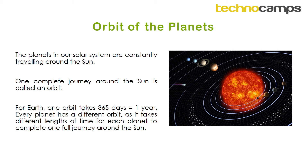So the first challenge in this activity pack is to research online how long it takes for all of the other planets to travel around the Sun in Earth days. Go onto Google and type in 'orbit of Mercury in days' and it will tell you the answer in Earth days. Do this for all of the planets and make a note of your answers, because we will need to use those later when coding our model of the solar system in Scratch. It's very important that you find these in Earth days for the model to work later on.